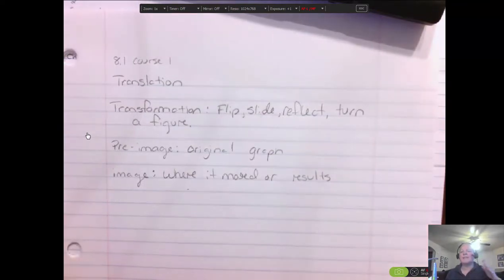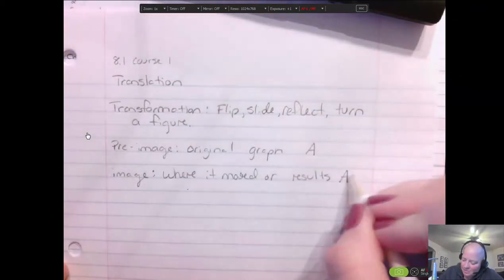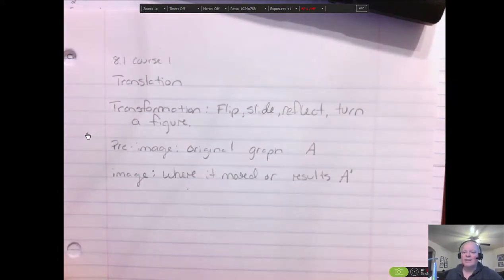Another thing I want you to realize is the notation for it, because this part is kind of important. If I called this one point A, this one would be the image would have a little apostrophe on it, so it's the image of A. So basically you took that exact spot A and you made its image and you use the apostrophe, and they use that notation all the time for the image.